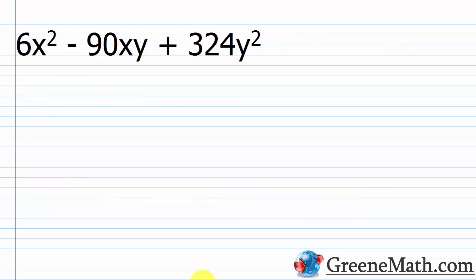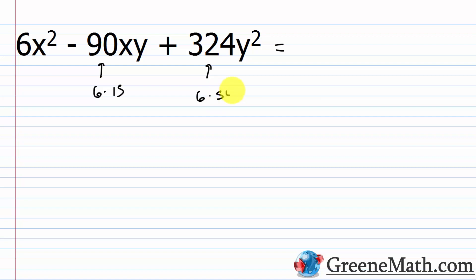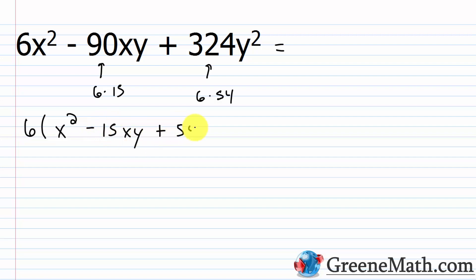For the last problem we have 6x² − 90xy + 324y². This is a bit more complex because it has two variables, but follow the same technique. First, ask: can I pull anything out? Yes — 6 divides every term: 6 goes into 90 fifteen times, and 6 goes into 324 fifty-four times. I can't pull out variables because x doesn't appear in the last term and y doesn't appear in the first. Pulling out 6, I get 6(x² − 15xy + 54y²).